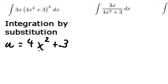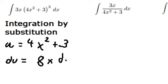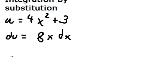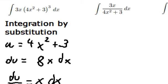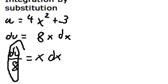Then we do the first derivative on both sides. Because we don't have number 8 in here, so we divide both sides by number 8. So this will change to u, and x dx will change to du over 8.